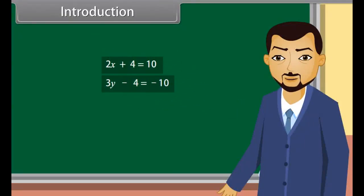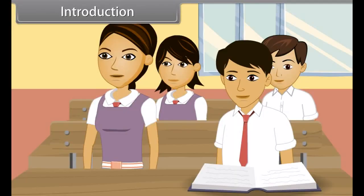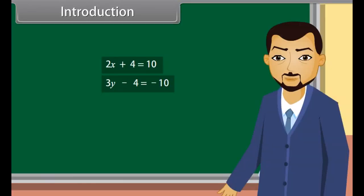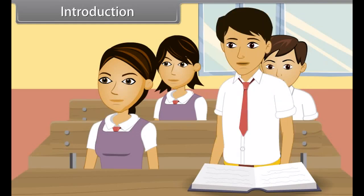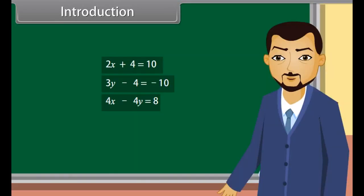Students, look at these equations. What type of equations are these? These are linear equations. And what type of equation is this? This is also a linear equation. You are right. This is also a linear equation, but it has two variables. So it's a linear equation in two variables. Today we will learn about the pair of linear equations in two variables.